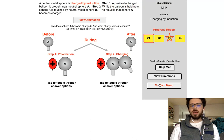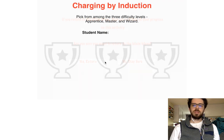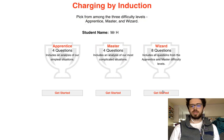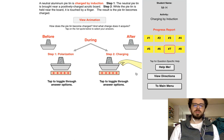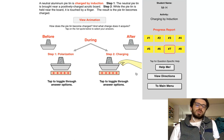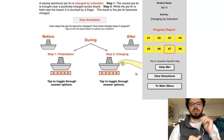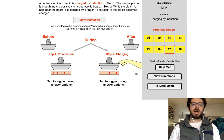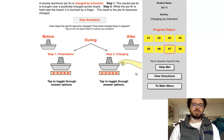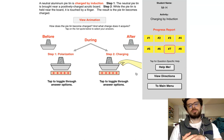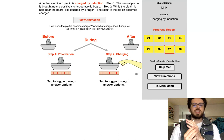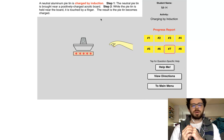Let's go to the main menu and do the very last one — wizard level. A neutral aluminum Python is charged by induction. Step one: the neutral Python is brought near a positively charged acrylic board. Step two: while the Python is held near the board, it's touched by a finger. The result is that the Python becomes charged. Let's view the animation.